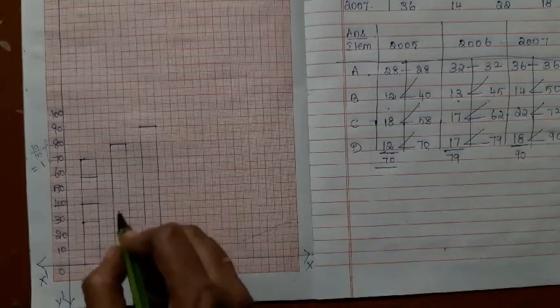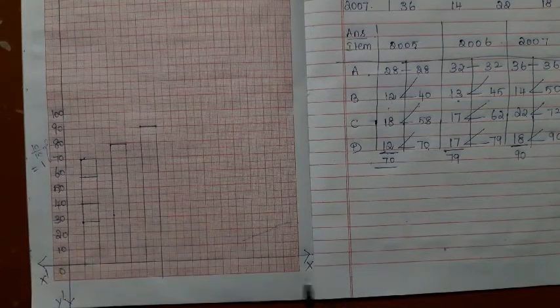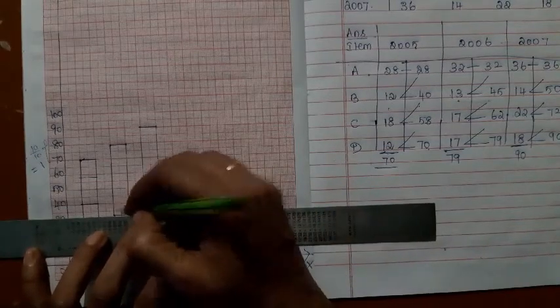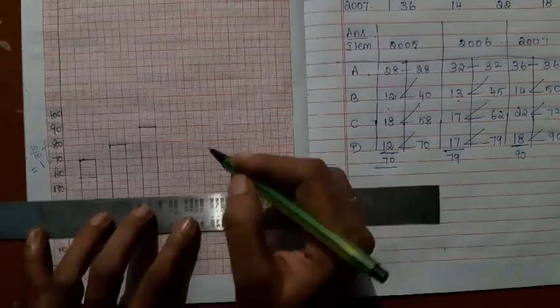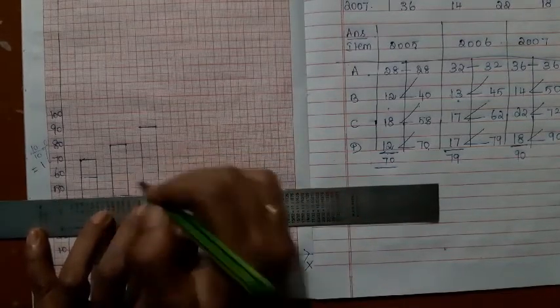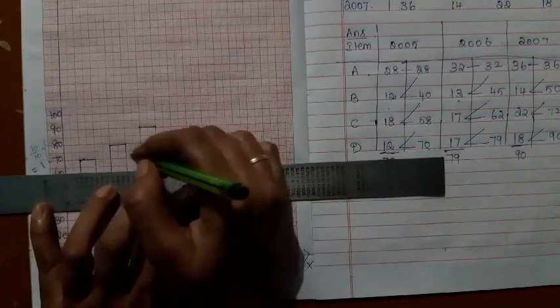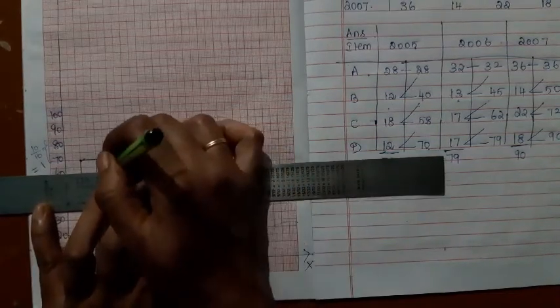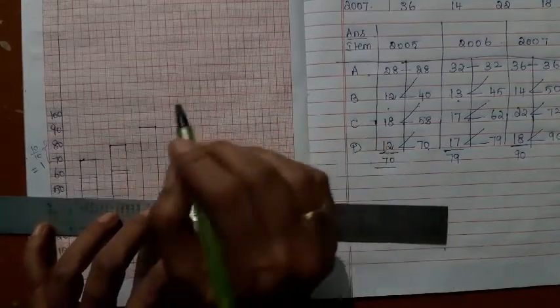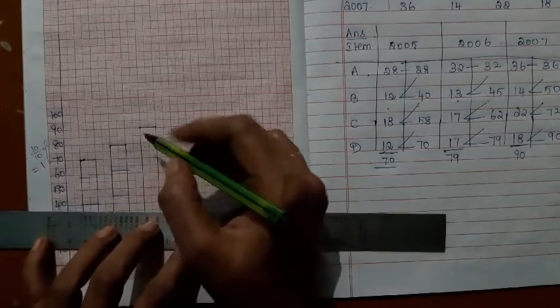So the first component is 32. Where is 32? 30, 31, 32. Then it is 45. 45 can be easily located. 45. Then it is 62. This is 60, 61, 62. Then it is 79. Already your subdivision is there.